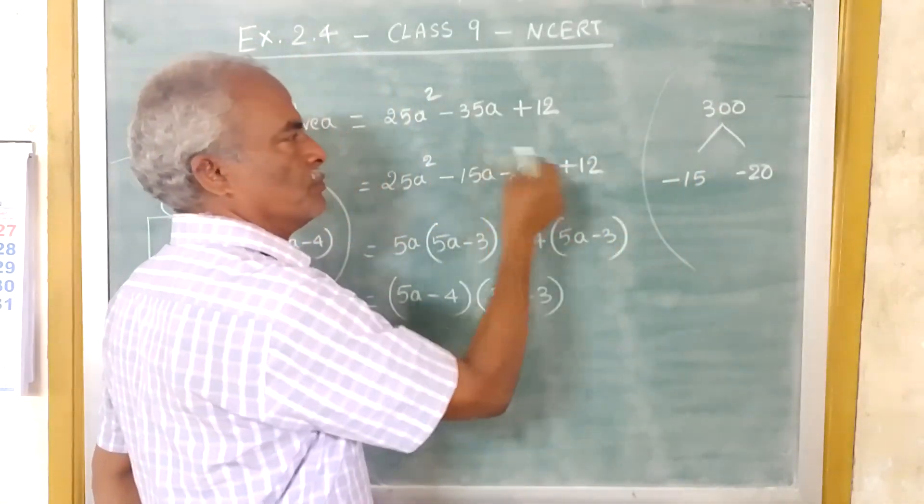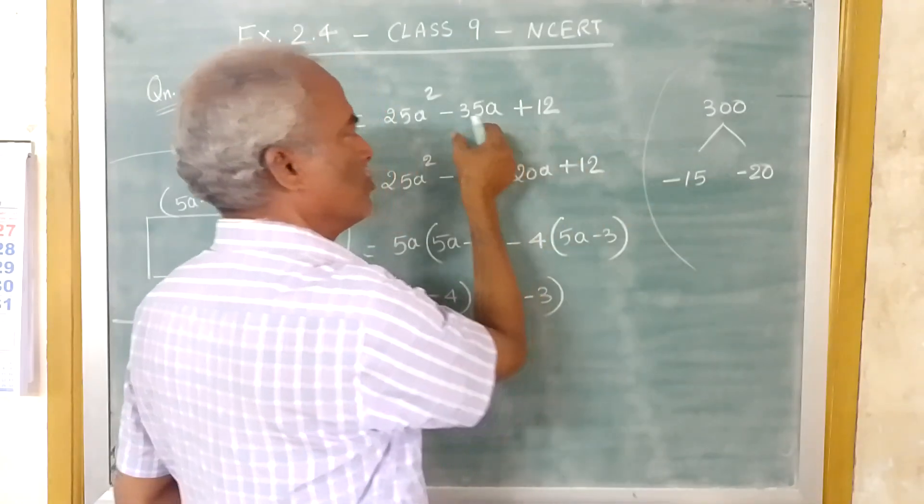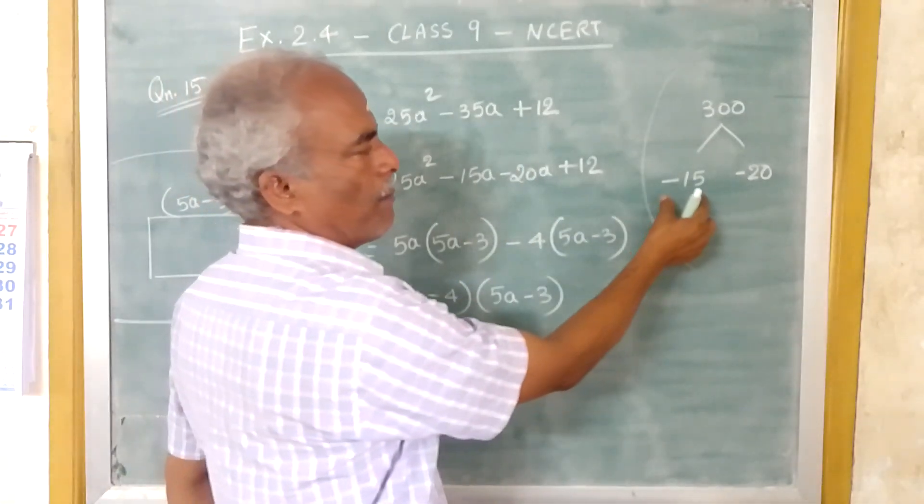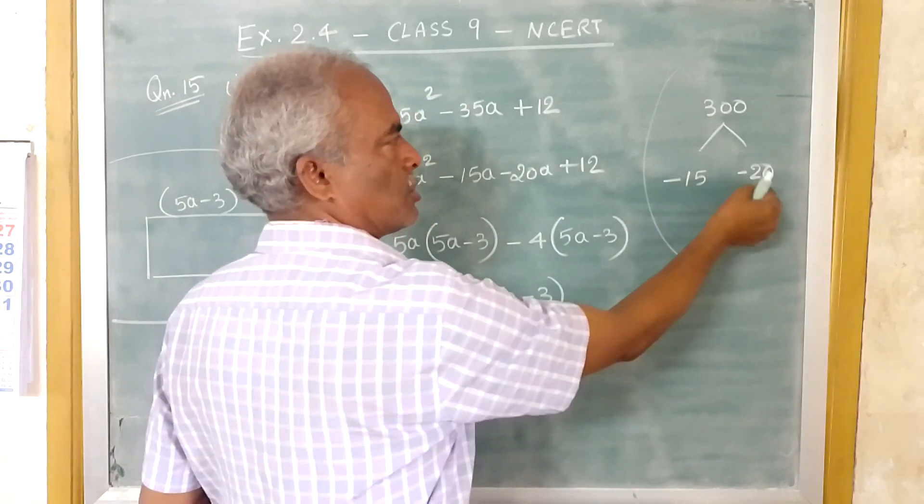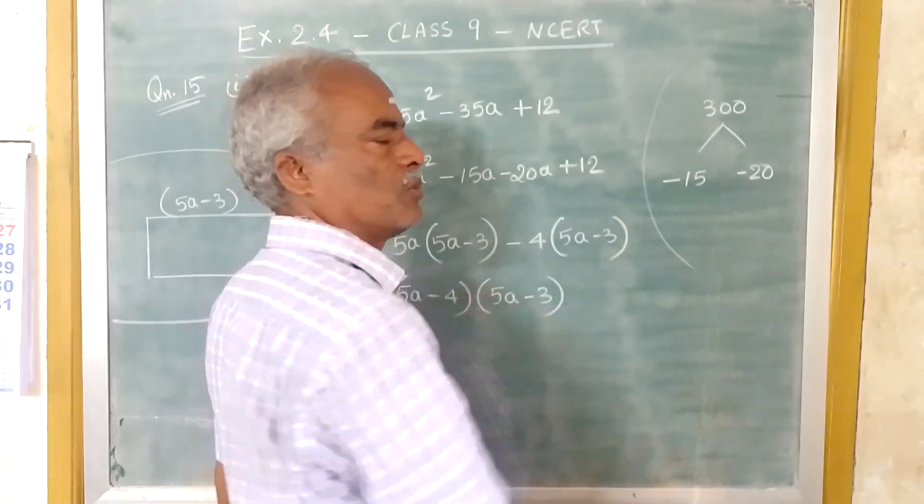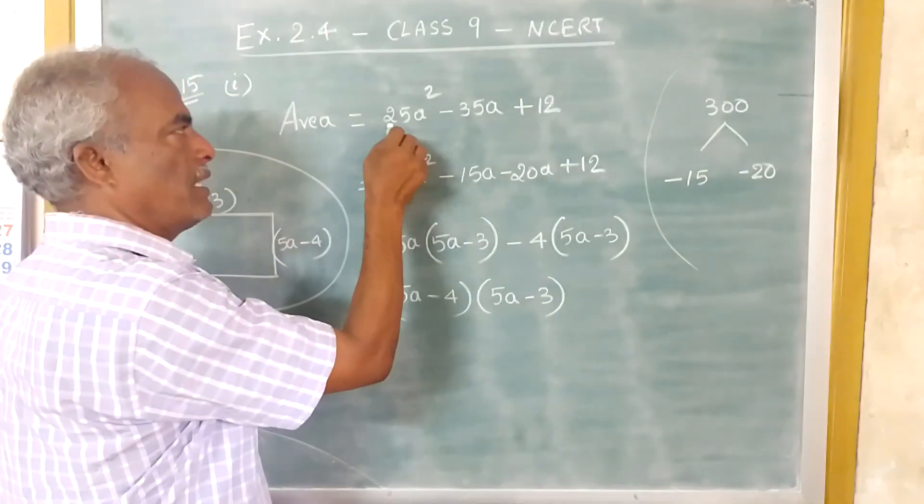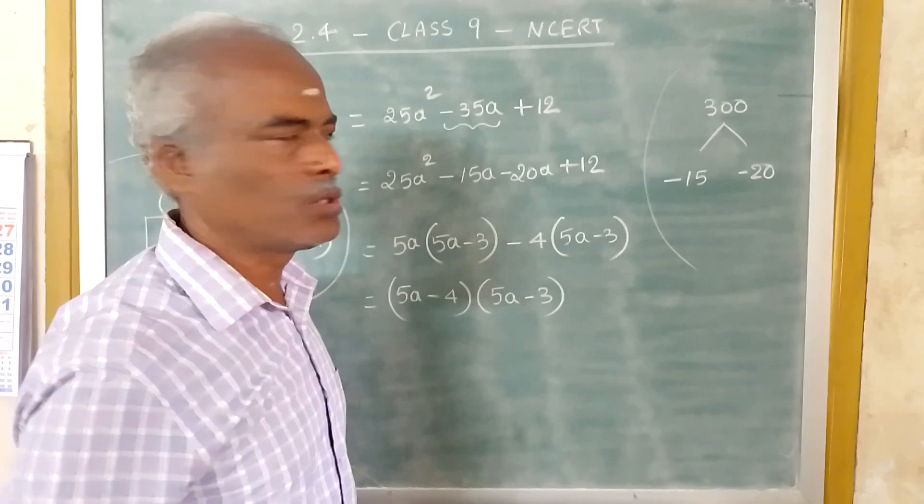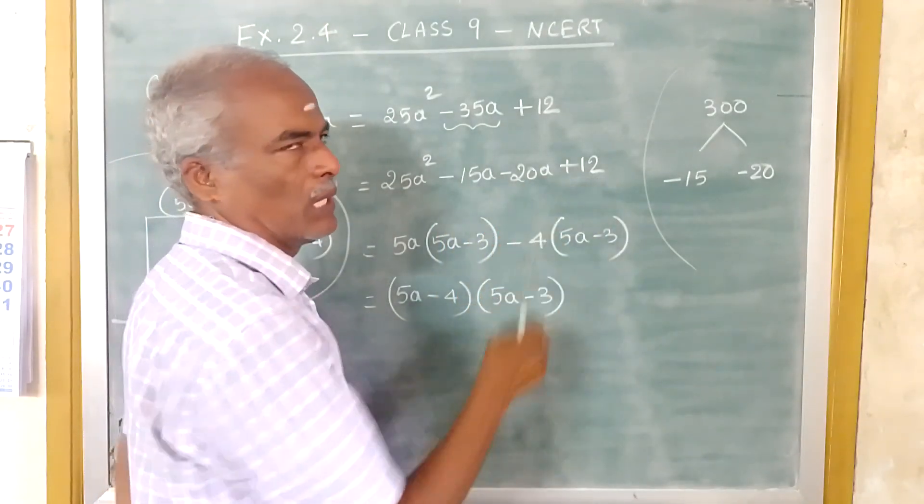Now if you multiply, you must get 300. If you add, you must get minus 35. So I am putting the value as minus 15 into minus 20. Minus into minus plus, 15 into 20 is 300. Minus 15 plus minus 20 will give you minus 35. So write this 25A square as it is. This minus 35 can be split into minus 15A minus 20A plus 12.